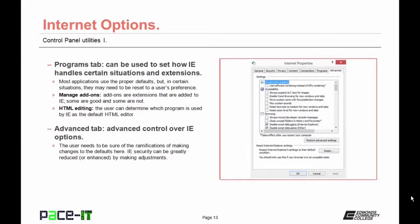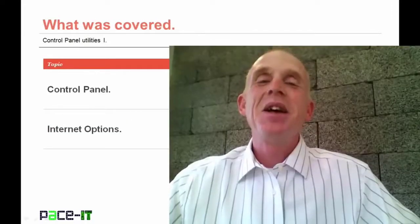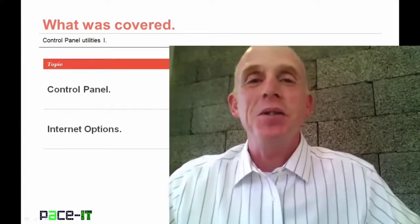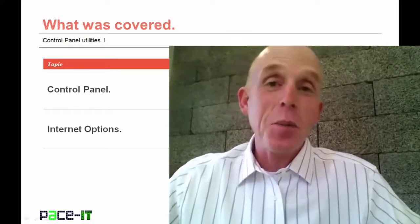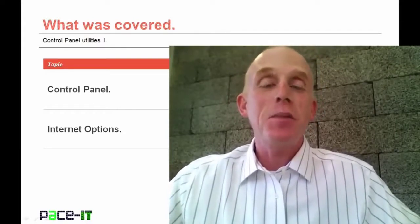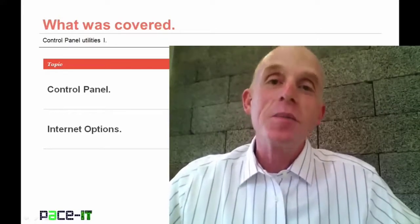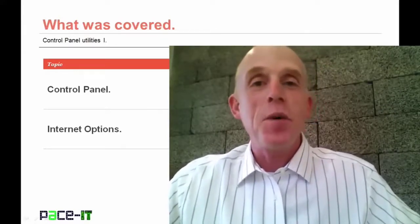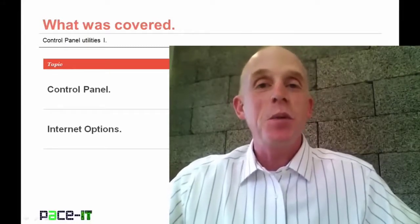The Advanced tab allows advanced control over Internet Explorer options — be sure of the ramifications before changing defaults here, as Internet Explorer security can be greatly reduced or enhanced. That concludes this session on control panel utilities. We briefly discussed what the control panel is and went into an in-depth discussion on the Internet Options applet. On behalf of PACE IT, thank you for watching this session, and I'm sure we will do it again soon.